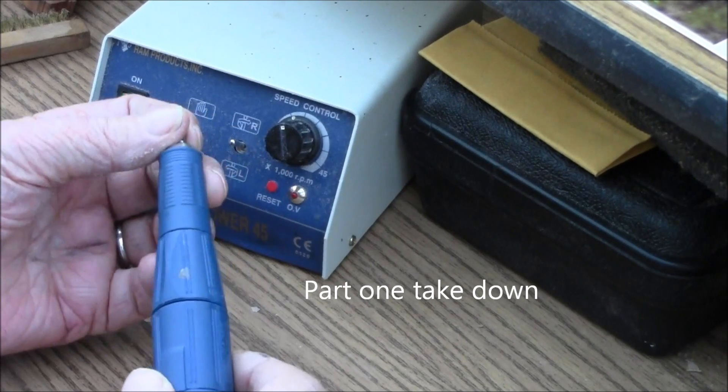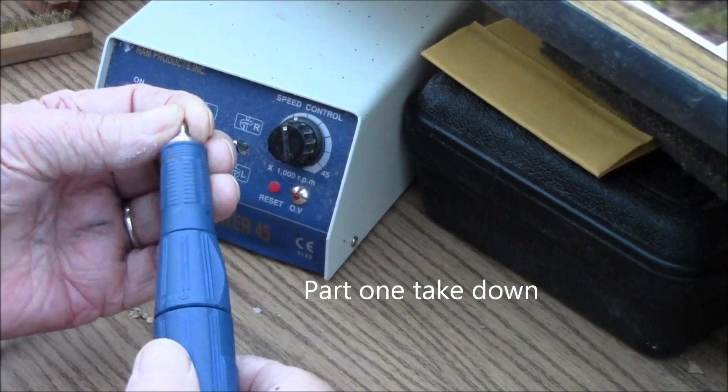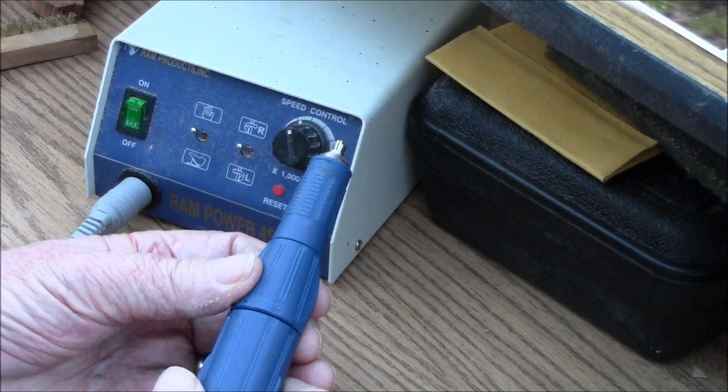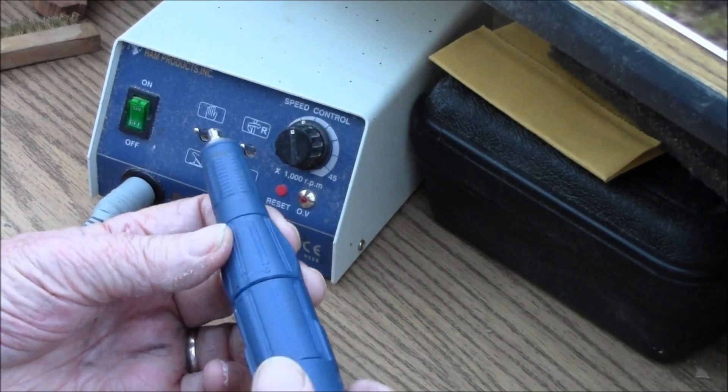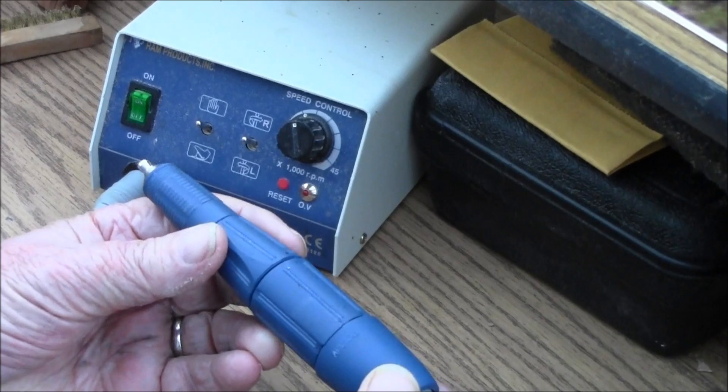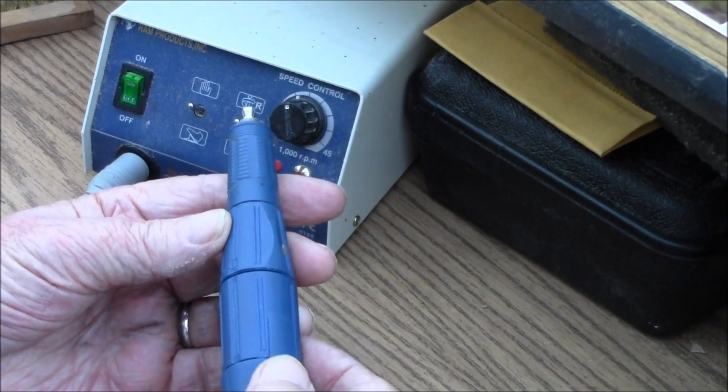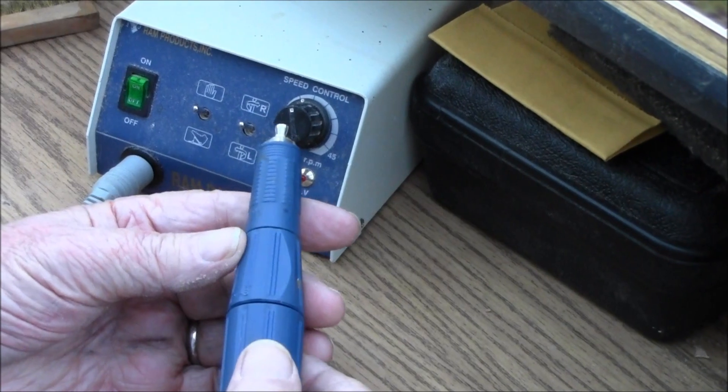Okay, we're going to talk about the Ram 45 power control box and the Ram 45,000 RPM handpiece and how to do a takedown and repair on it.